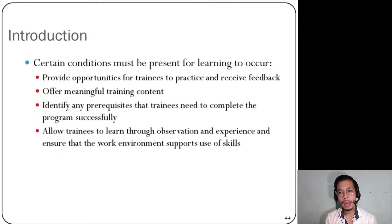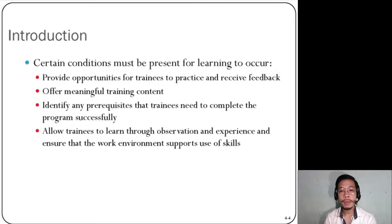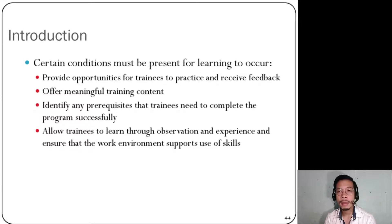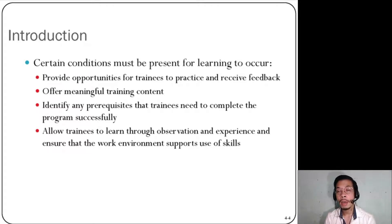Just a quick introduction again: training is not just about imparting knowledge and giving information to trainees. It should have at least the following checklist in order to achieve successful transfer of learning. Number one, there should be an opportunity for trainees to practice and receive feedback — one way of telling trainees what needs improvement and what their strengths are, because without feedback, trainees will not know what needs to be improved. Next, offer meaningful training content, because once trainees find meaning and are passionate in what they're doing, they will be more engaged.